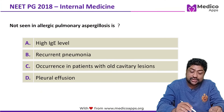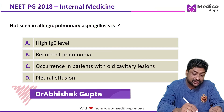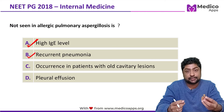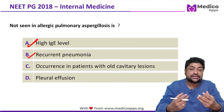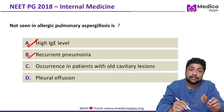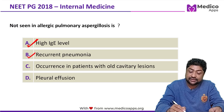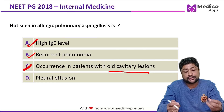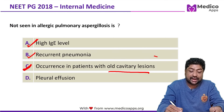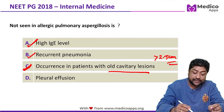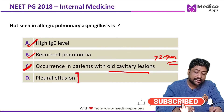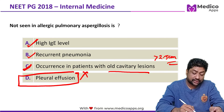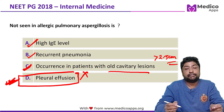Coming back to the question — 'Not seen in allergic bronchopulmonary aspergillosis.' High IgE level is seen. Recurrent pneumonia is seen because of recurrent infarction and pre-existing pulmonary pathology. Occurrence in patients with old cavitary lesions is a known risk factor for aspergillosis, especially cavities more than 2.5 cm. Pleural effusion, however, is not characteristically associated with ABPA. So the correct answer is pleural effusion.